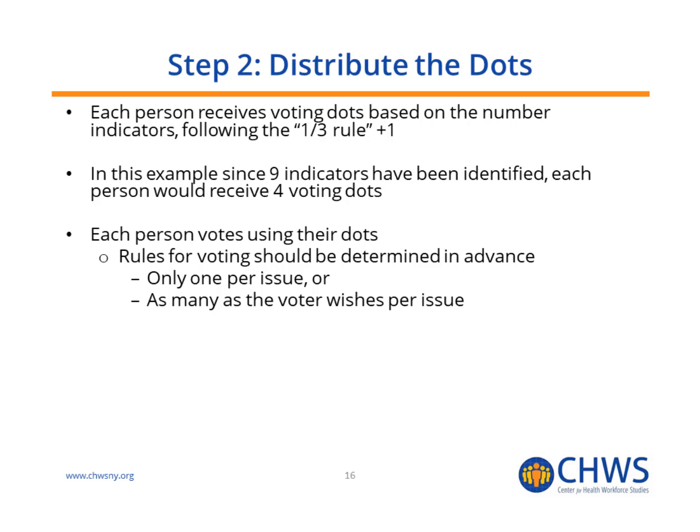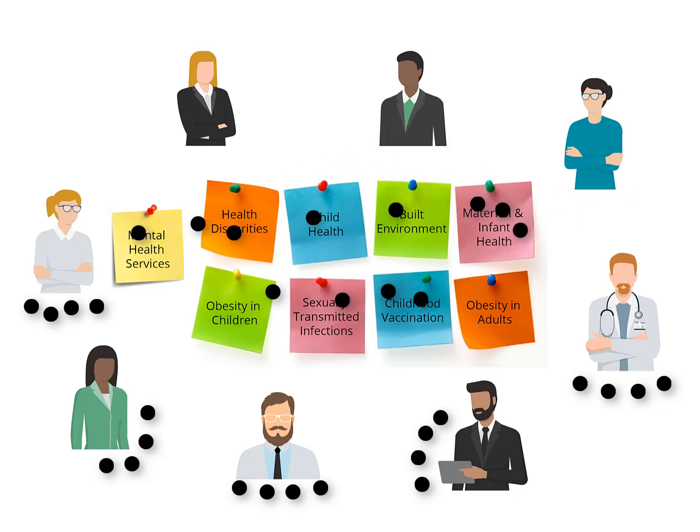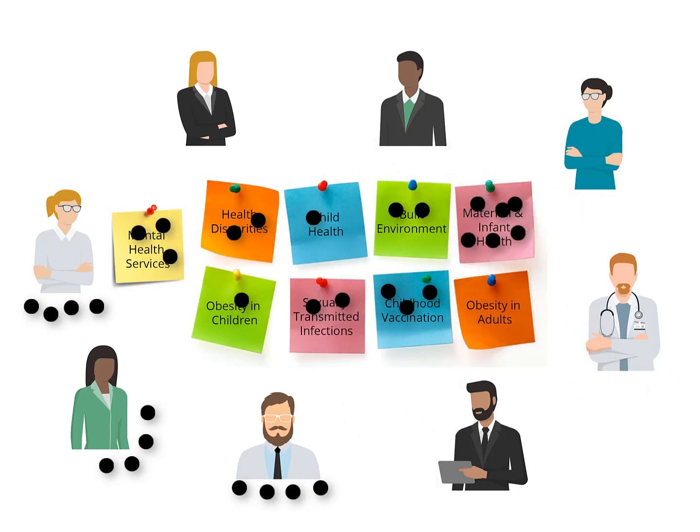Prior to voting, voting guidelines should be established. You can either require that participants use only one dot per issue or allow them to place as many dots as they wish on an issue. If you allow voters to place more than one dot on an issue, you may want to consider increasing the number of dots given to each participant. Once everyone has the appropriate number of dots, the voting can begin.